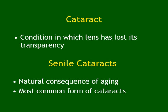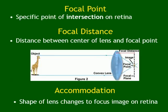Cataract is treated either by removing the lens and wearing glasses to compensate for refraction, or — more commonly now — by inserting an artificial lens. Light refraction starts at the cornea, then through the lens, and the goal is always to focus on the fovea centralis, which is in the center of the macula densa.